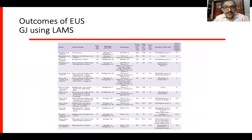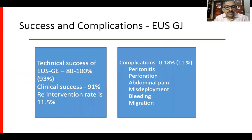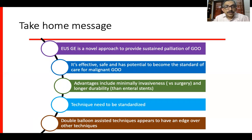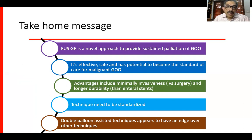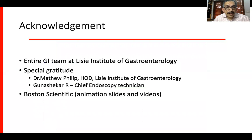Multiple studies using different techniques show an overall technical success rate of about 93–100%, clinical success rate of 91%, re-intervention rate of about 11%, and complication rate of 11%, including misdeployment and peritonism. To summarize, EUS-guided gastroenterostomy is a novel approach to provide sustained palliation of gastric outlet obstruction. It is effective, safe, and has potential to become the standard of care for malignant gastric outlet obstruction. Advantages include being minimally invasive and having longer durability than enteral stents. The technique needs to be standardized, and the double balloon assisted technique appears to have an edge over other techniques. I am thankful to my team for all the help and support. Thank you.